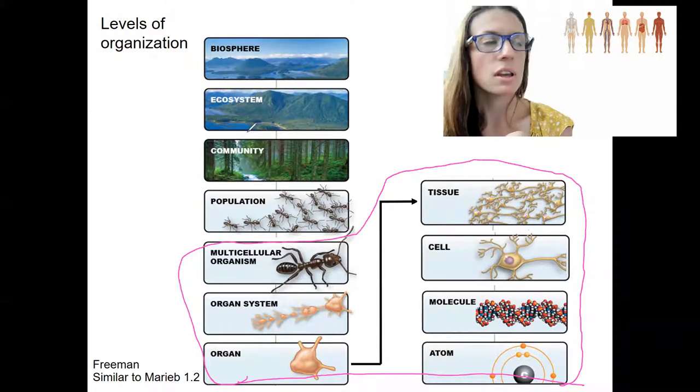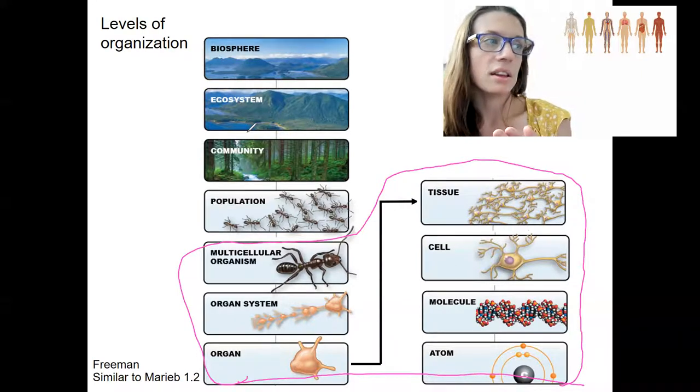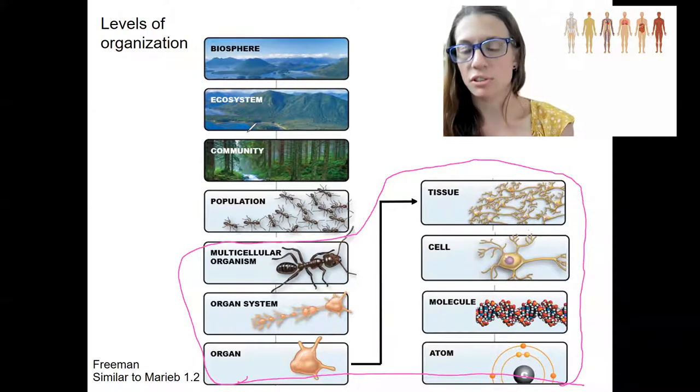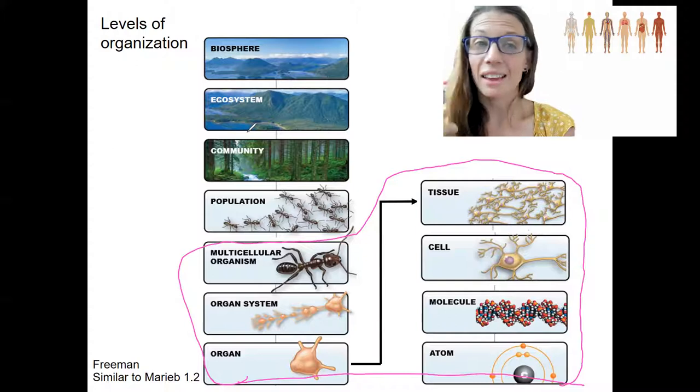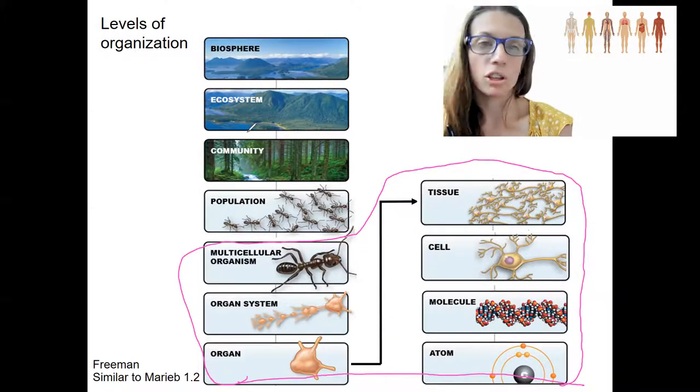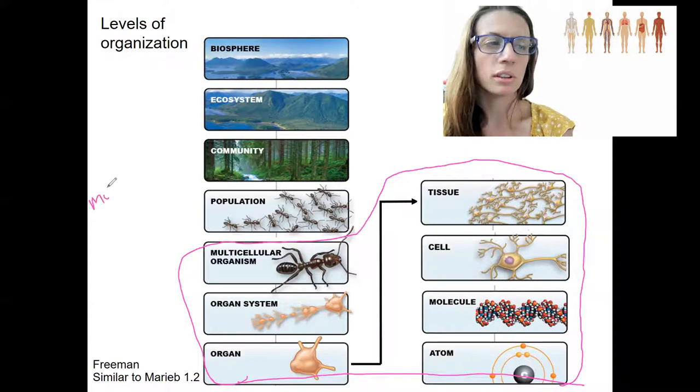but will not be the focus of this course. So these are called levels of organization because it's looking at function across these different literal levels of how our bodies are put together. So physiology and anatomy are the study of molecule to organism. Molecule to organism is going to be the focus.